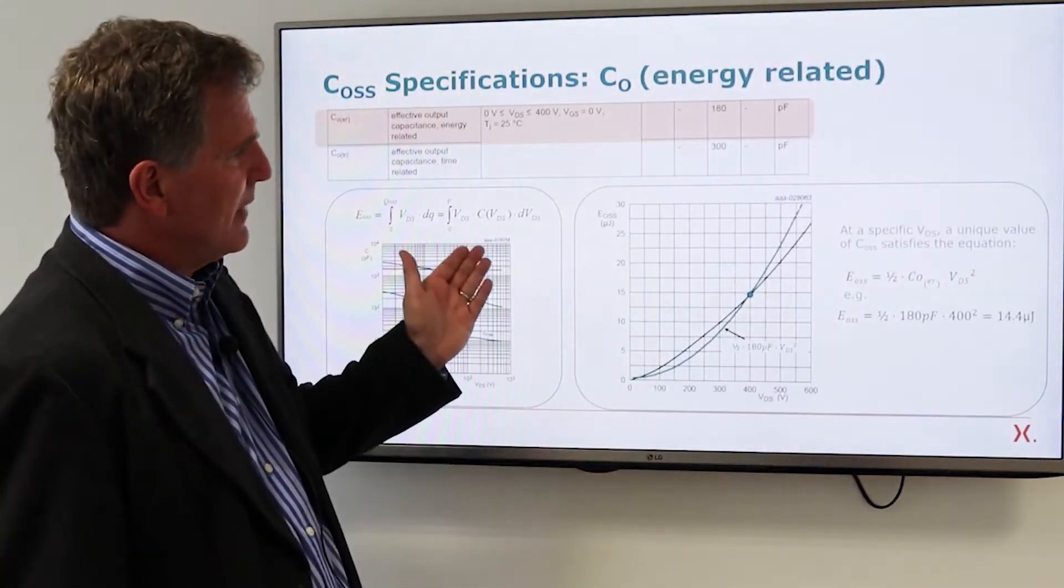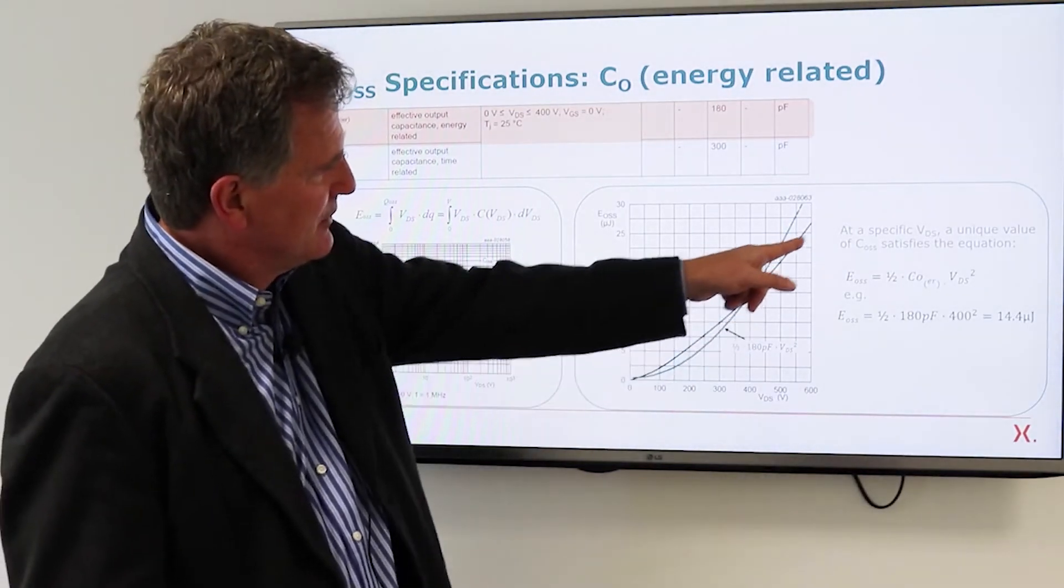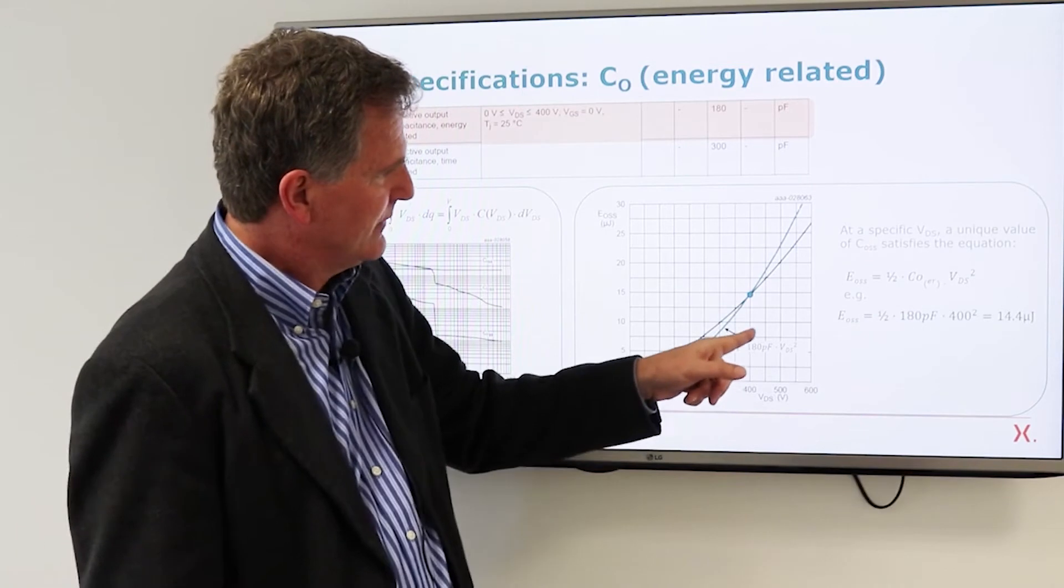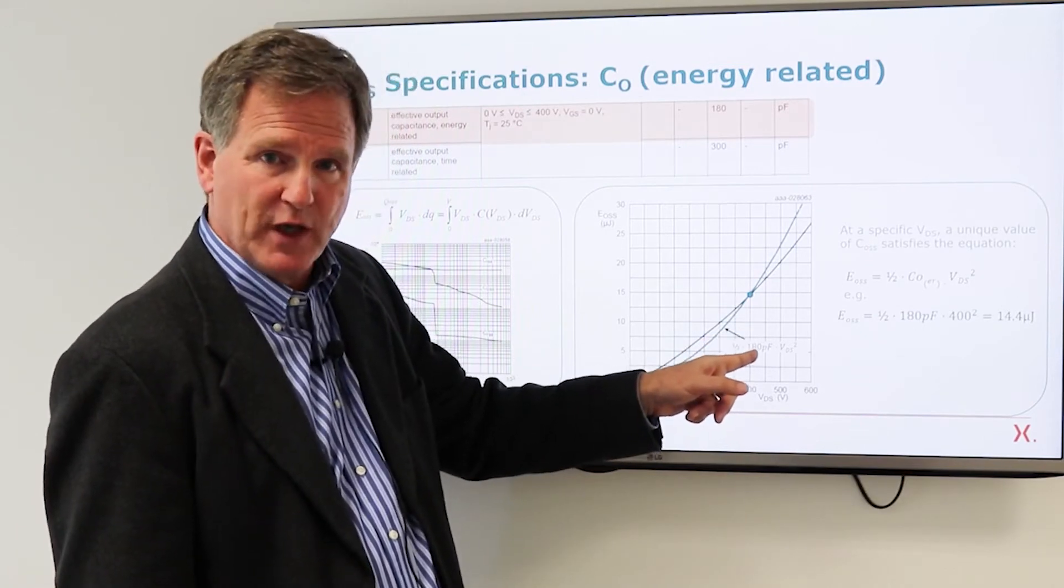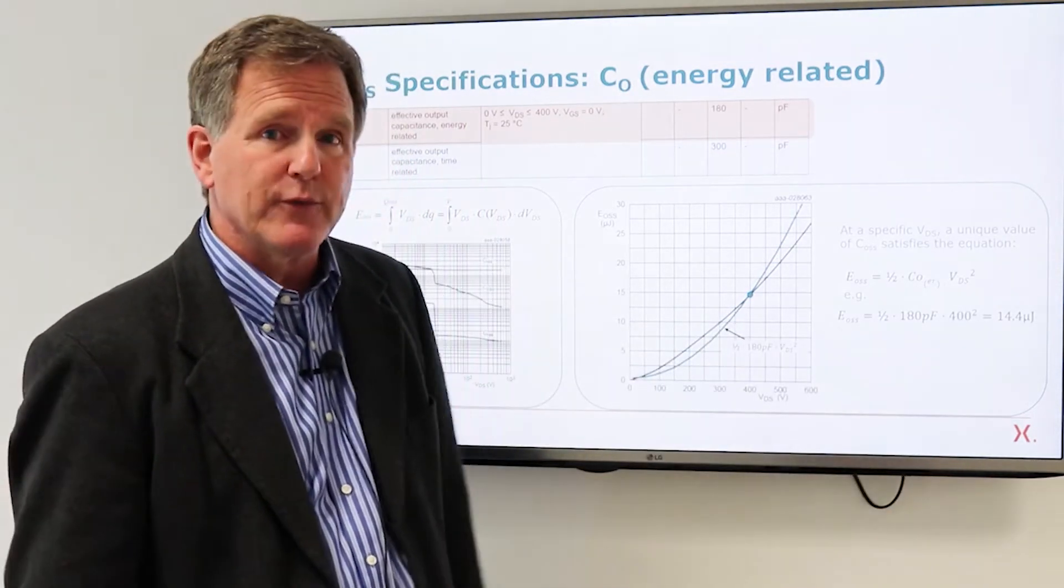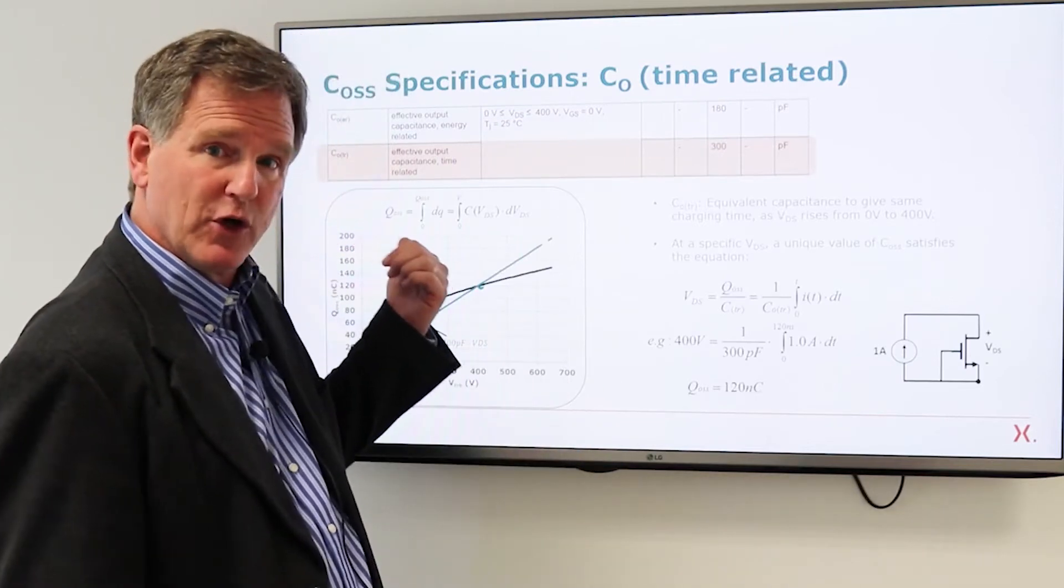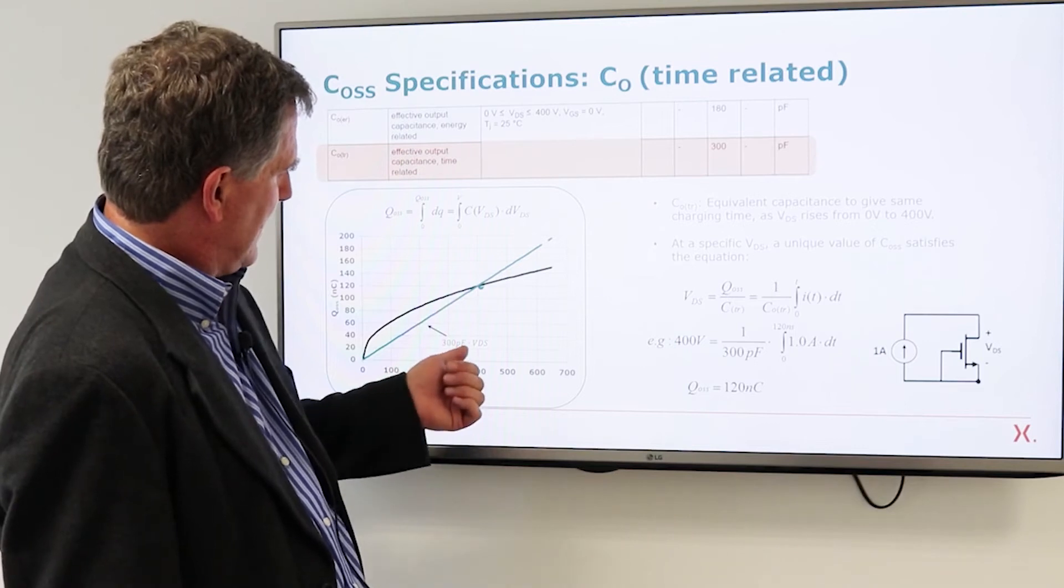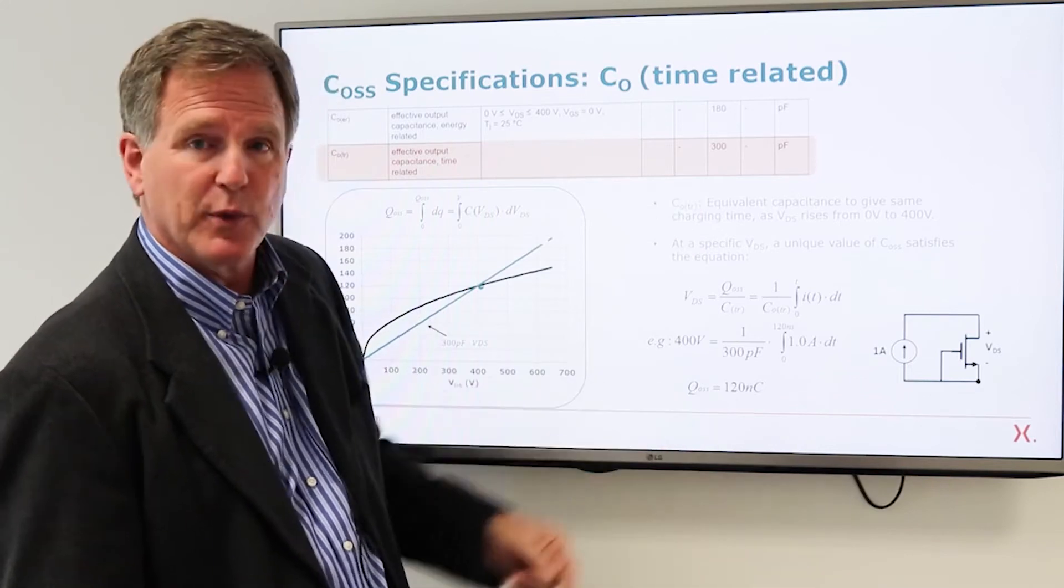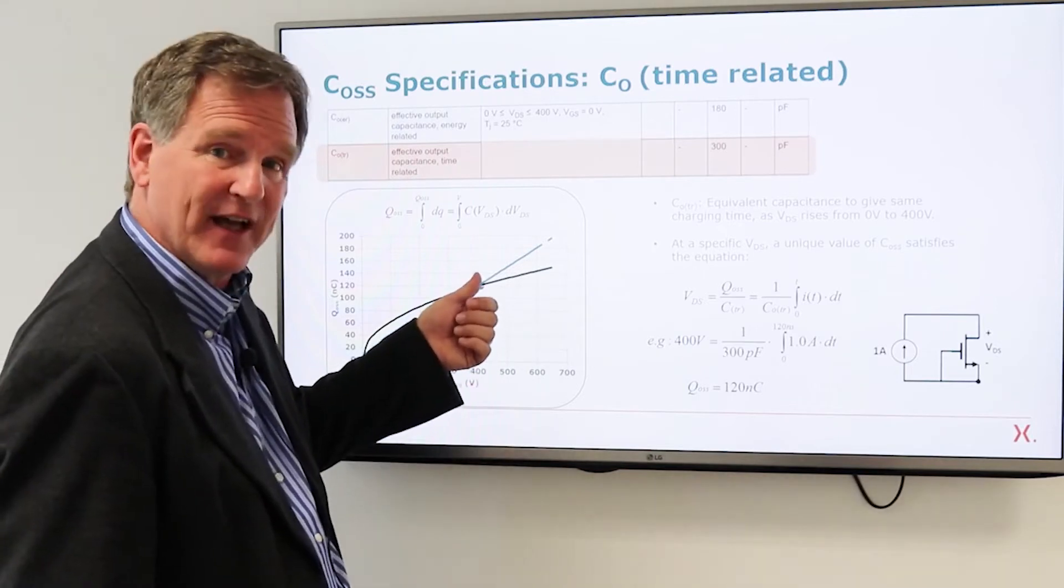Okay so the energy related output capacitance defines a parabola that exactly matches the actual EOSS curve at one specific voltage so at 400 volts a capacitance of 180 picofarads will correctly predict 14.4 microjoules but only at 400 volts. Similarly if you want to know the output charge at exactly 400 volts a value of 300 picofarads will predict 120 nanocoulombs the same as the actual QOSS charge at that voltage.